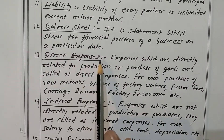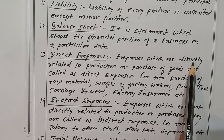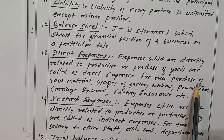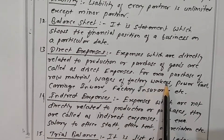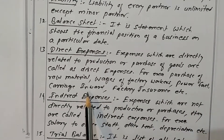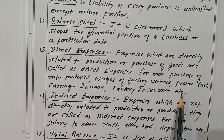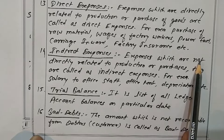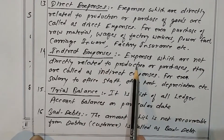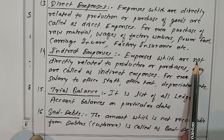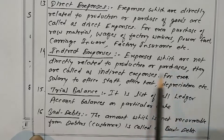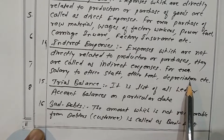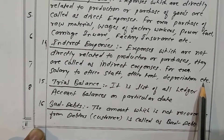What are direct expenses? Expenses which are directly related to production or purchase of goods are called direct expenses — for example, purchase of raw material, wages of factory, power, fuel, carriage inward, factory insurance, etc. What are indirect expenses? Expenses which are not directly related to production or purchases are called indirect expenses — for example, salary to office staff, office rent, depreciation, printing, stationery, postage, etc.